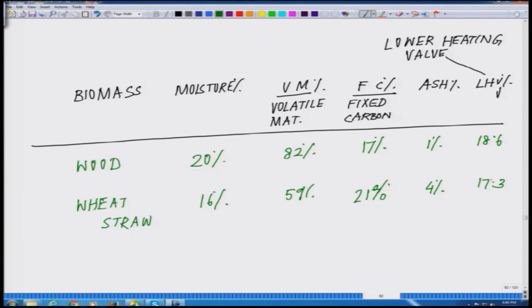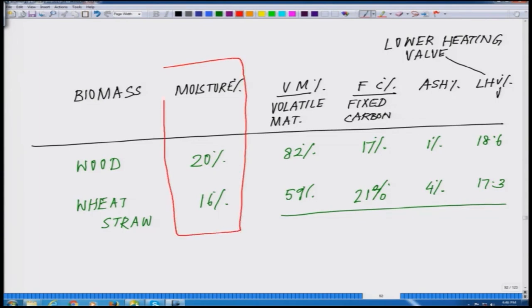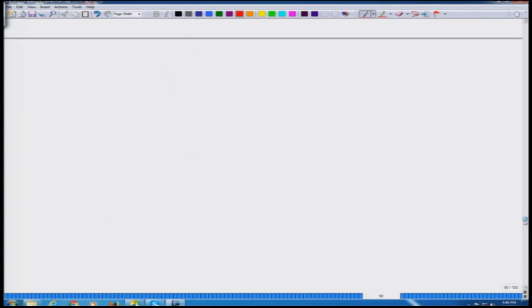Just at this stage, do not worry about the LHV part of the table — just concentrate on the other columns for now. This value is very critical, and the values being reported in any literature are the intrinsic values. Always remember that when tables like these talk about moisture content, they talk about the intrinsic value — they do not talk about the extrinsic value.